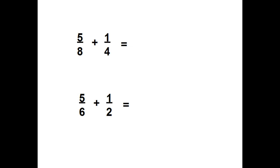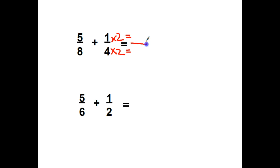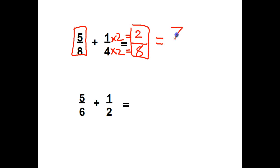5 eighths plus 1 fourth. Can I take 4 times something to equal 8? Yes, I can take it times 2. If I take the bottom times 2, I'm taking the top times 2. So my 1 fourth is really the same as 2 eighths. Now I have 5 eighths plus 2 eighths equals 7 eighths. And it's as simple as it can go because 7 is a prime. It's not an improper fraction, and there's nothing I can divide 7 and 8 both by.